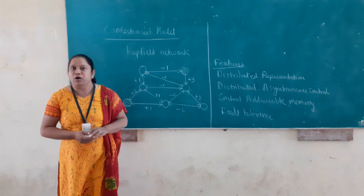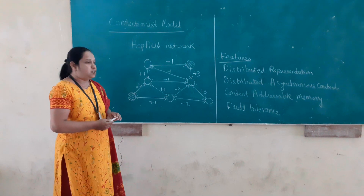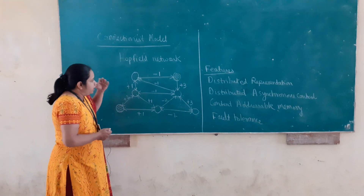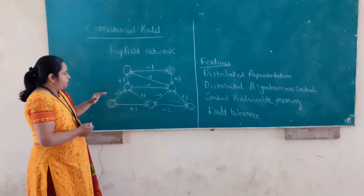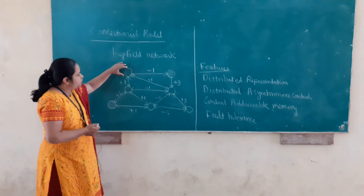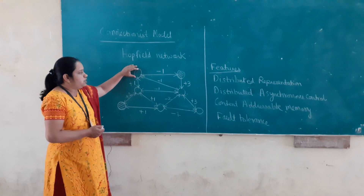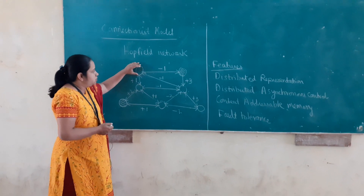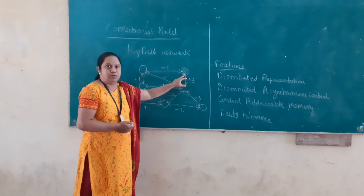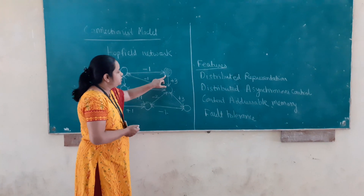The weight is either negative or positive. Now what does this negative or positive weight signify? Let us see how this whole thing works. Whenever we start this Hopfield network, we start from any particular random processing element. What we try to find is: are there any processing elements which are connected to this particular processing element in an active state? If you find this particular element is in an active state, then whatever weights are associated with this active processing element, the sum of these weights is calculated.